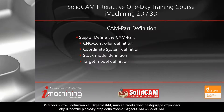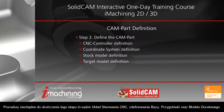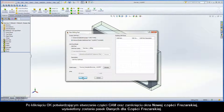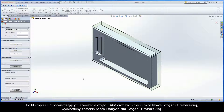In Step 3 of the CAMPART definition process, the following actions have to be implemented to complete the first stage of defining the CAMPART for SolidCAM. The procedures for completing this step include selecting the CNC machine controller and defining the machine coordinate system, stock model, and target model. After clicking OK to confirm the CAMPART creation and close the new milling part dialog box, the milling part data dialog box is displayed.